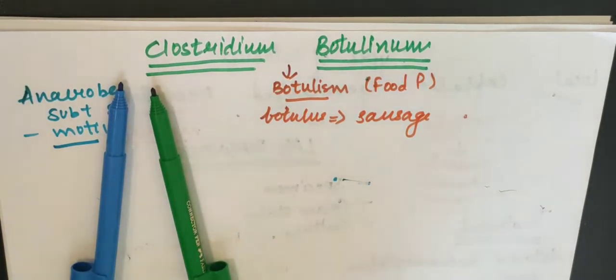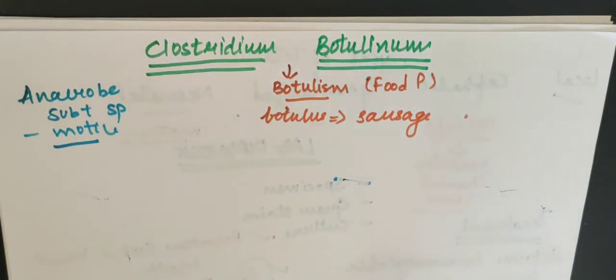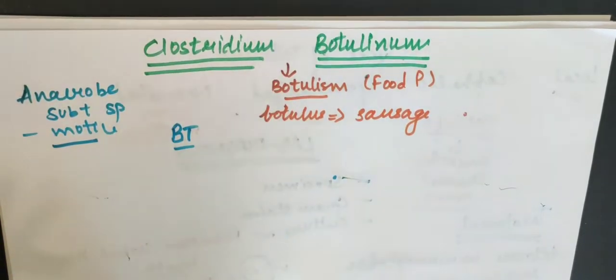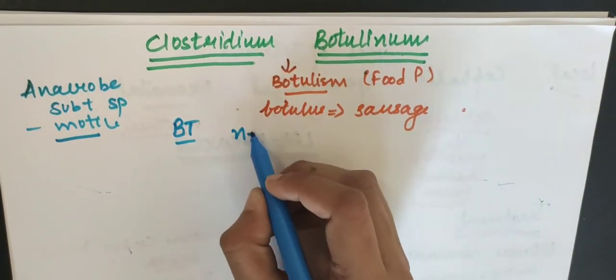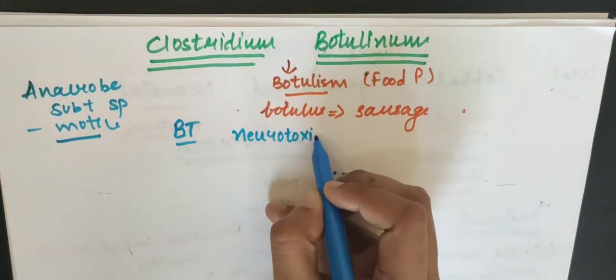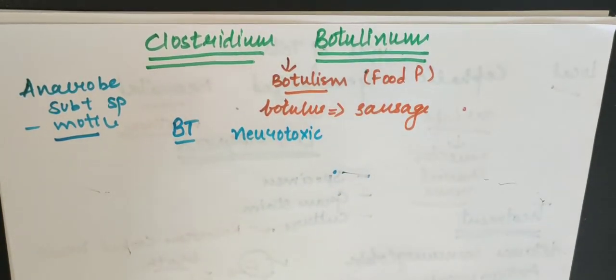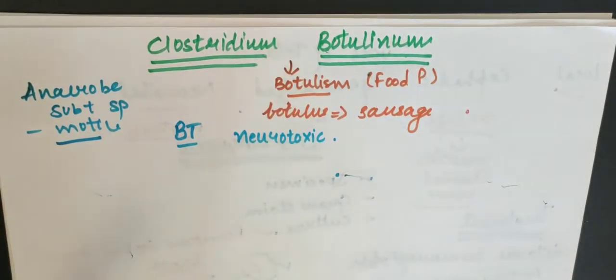So that this causes botulism. Now, it's toxin. What secretable? Because the toxin - botulinum toxin - this is a very different name. It is a very potent neurotoxin and it is very invasive. This is the most toxic substance known to be lethal to mankind. So it is very toxic.